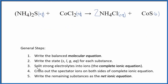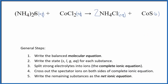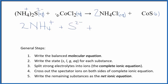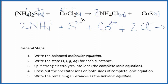So we have our states. Now we can split the strong electrolytes into ions — this will give us the complete ionic equation. The ammonium ion is 1 plus, and sulfur is 2 minus, so we have two ammonium ions and one sulfide ion, S 2 minus. Then cobalt is a transition metal, so we don't really know its charge — we have to look at what it's bonded to. The chloride ion is 1 minus, and we have two of them, so cobalt has to be 2 plus. We have the cobalt 2 ion and then 2 chloride ions.